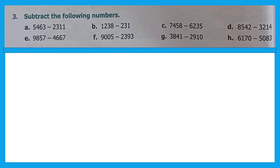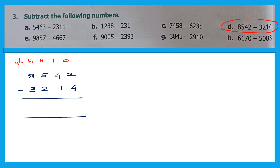Let's do question D. Write ones, tens, hundreds, thousands. The question is 8,542 minus 3,214. We can't do 2 minus 4, so we borrow from 4 — it becomes 3 and this becomes 12. 12 minus 4 is 8. Then 3 minus 1 is 2. Hundreds: 5 minus 2 is 3. Thousands: 8 minus 3 is 5. The answer is 5,328.